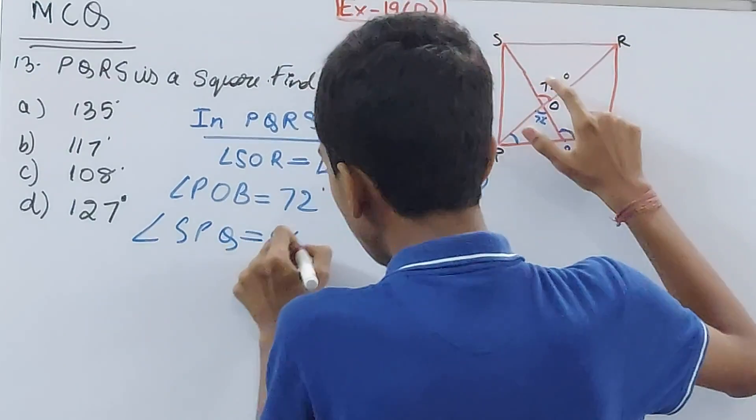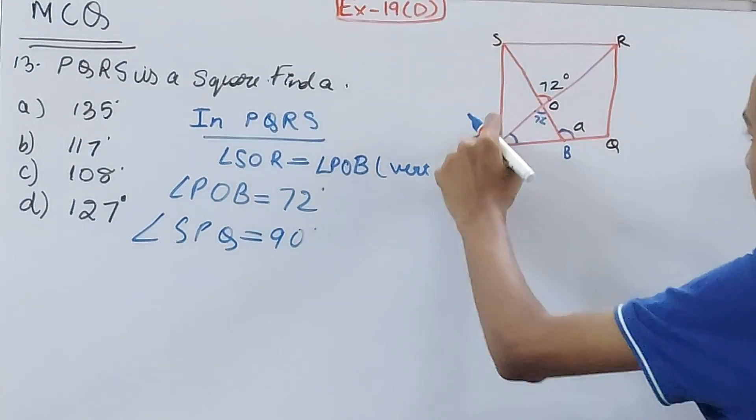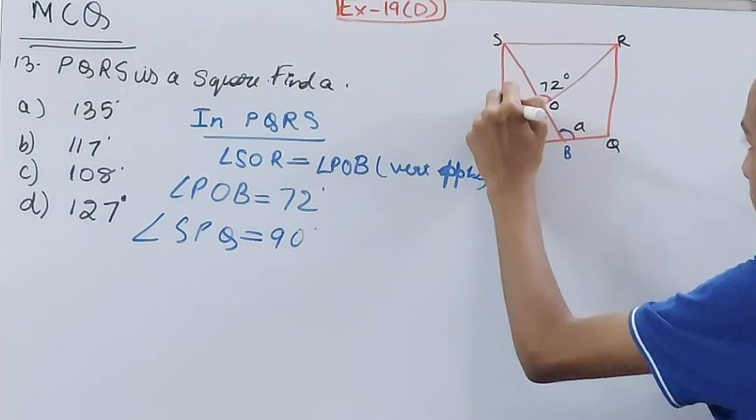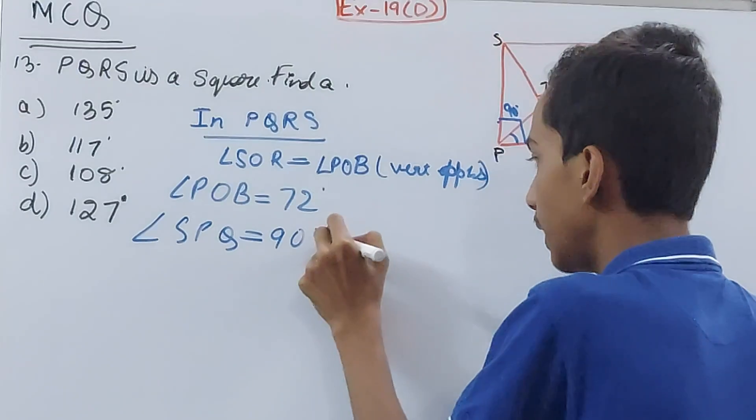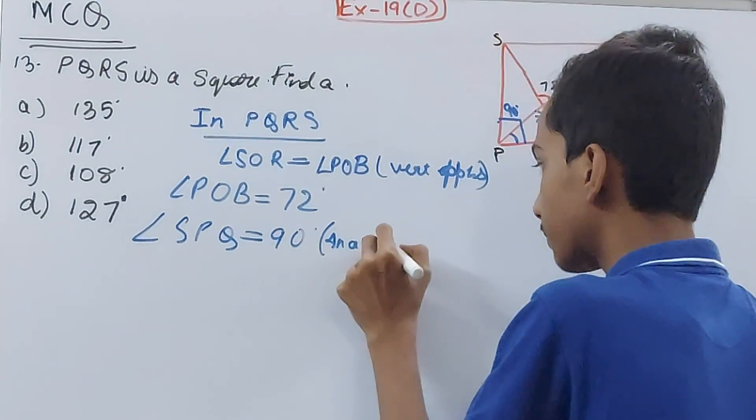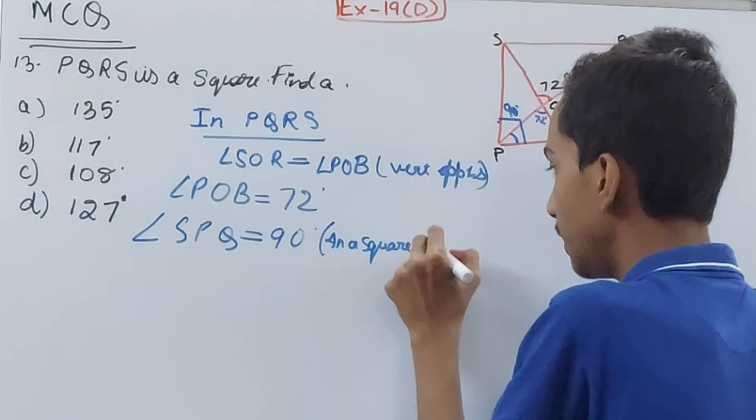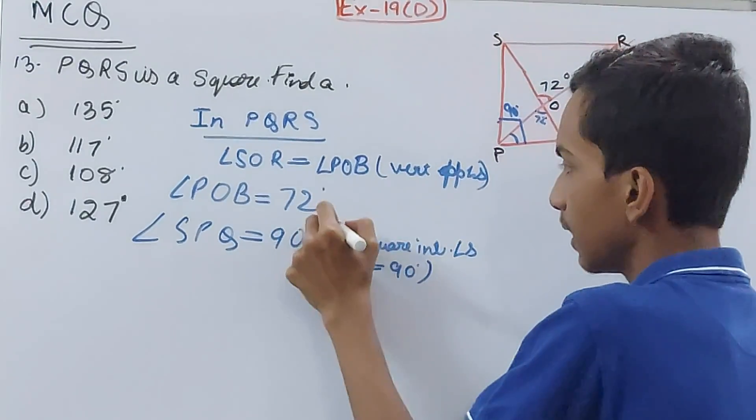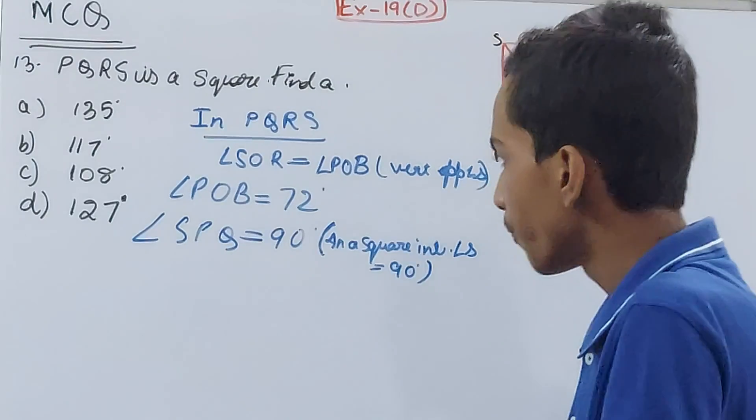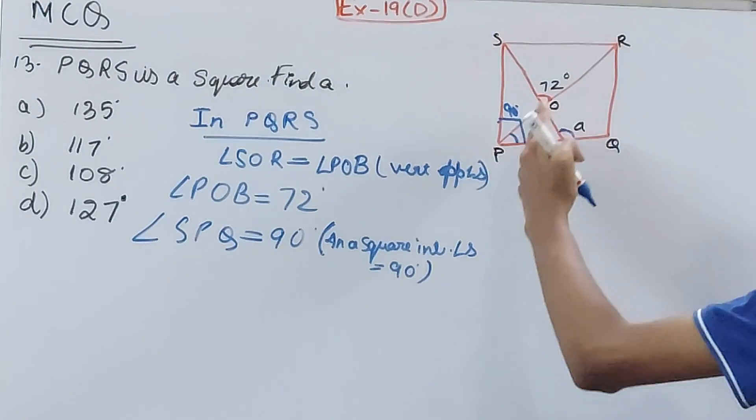Angle SPQ equals 90 degrees or not? Yes, this entire angle is 90 degrees. What reason? In a square, interior angles equal 90 degrees. Yes, it's a simple property.